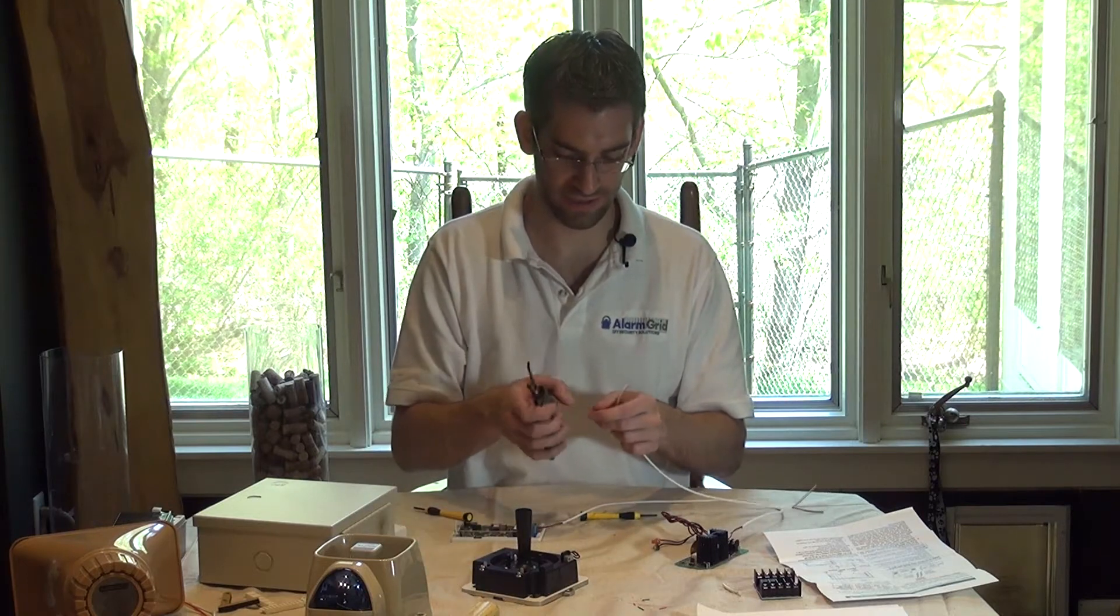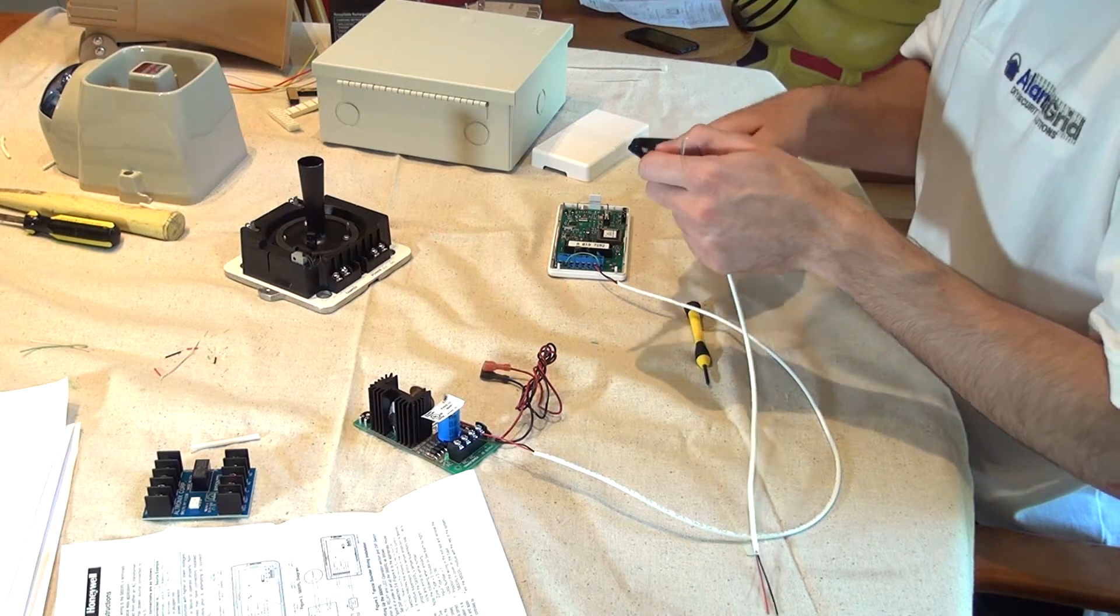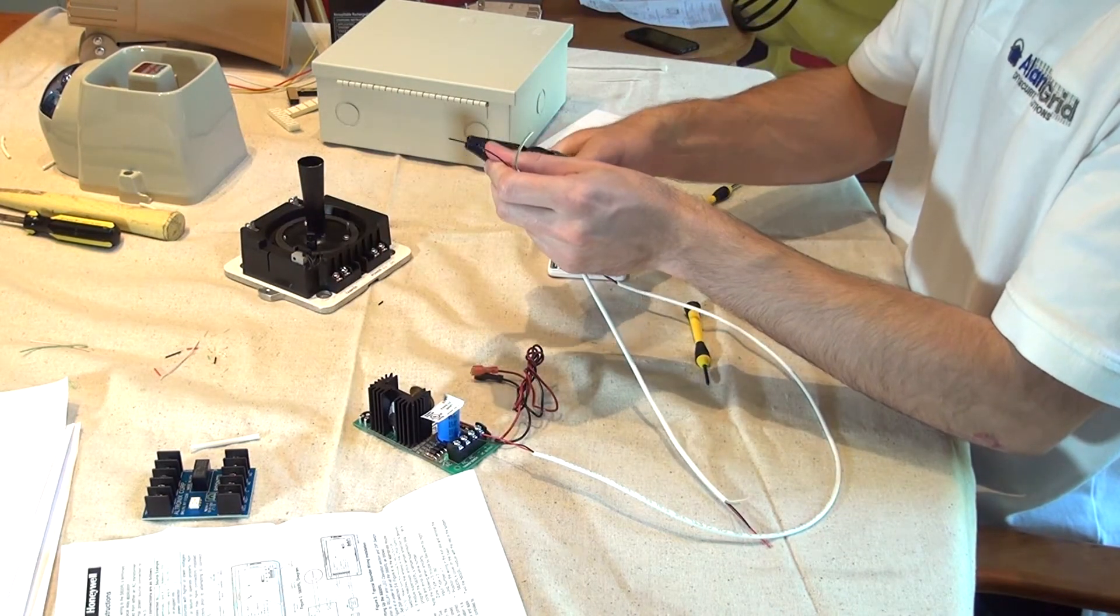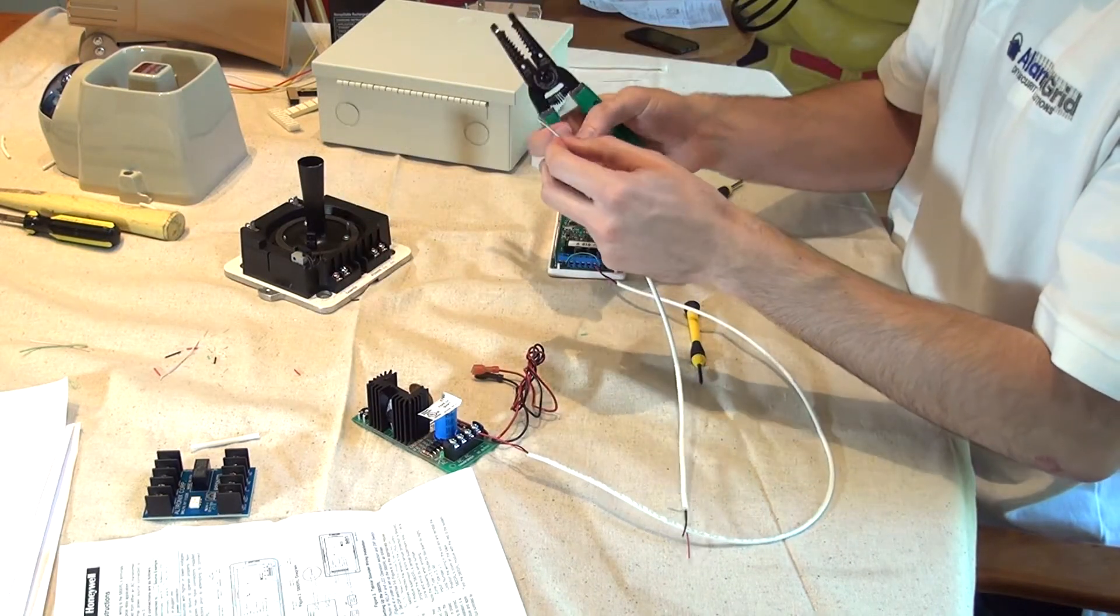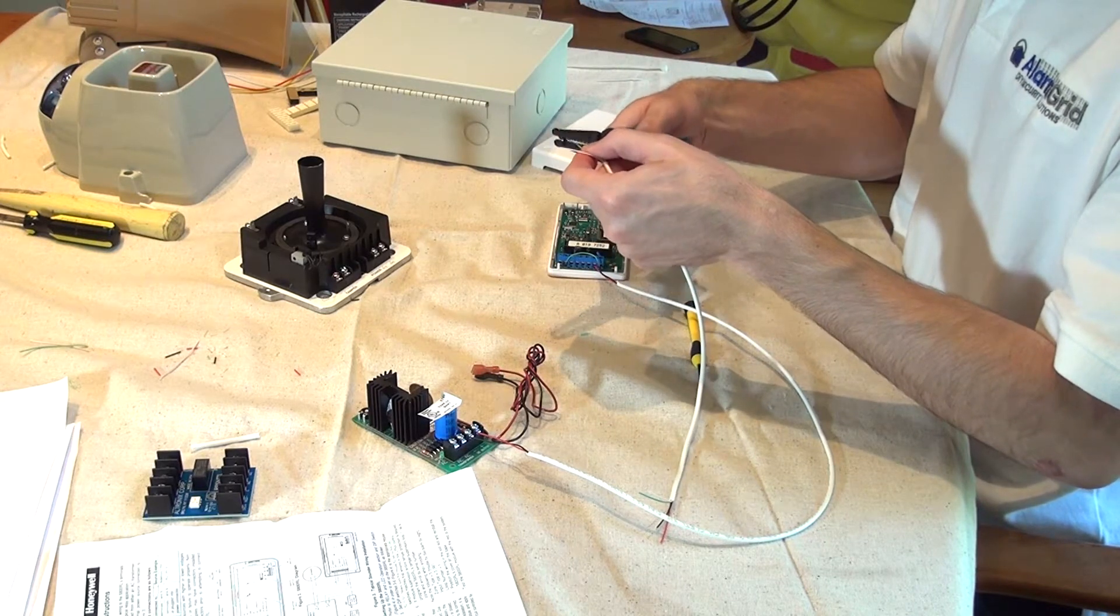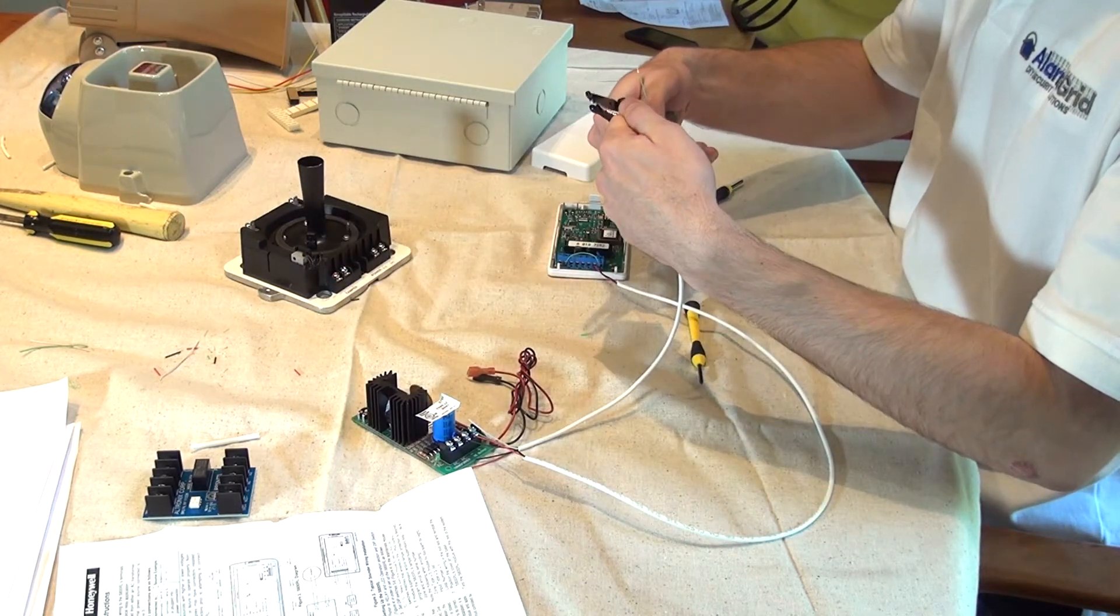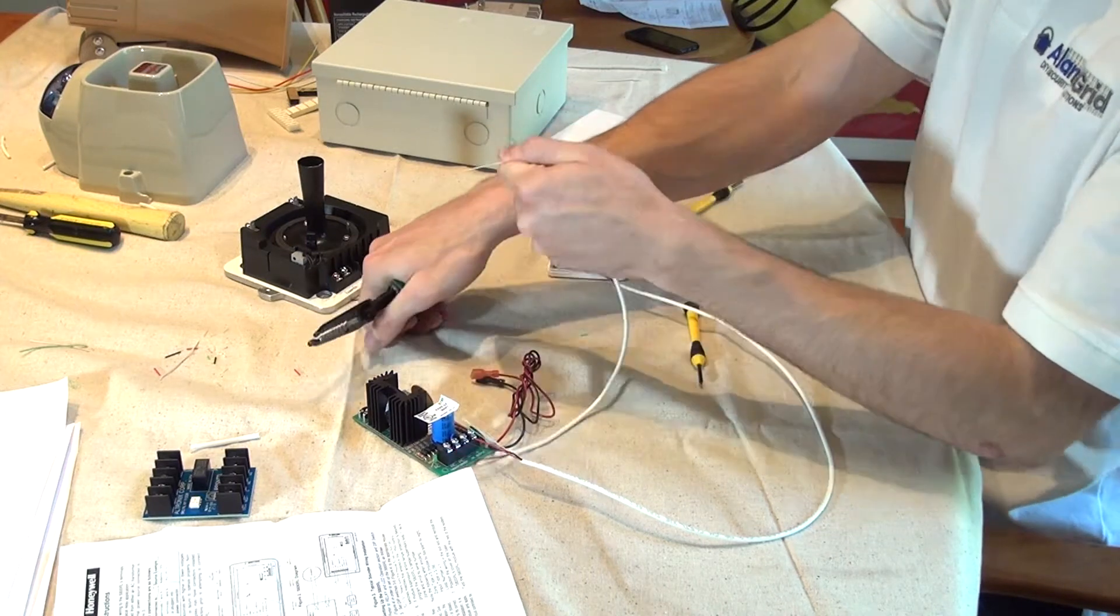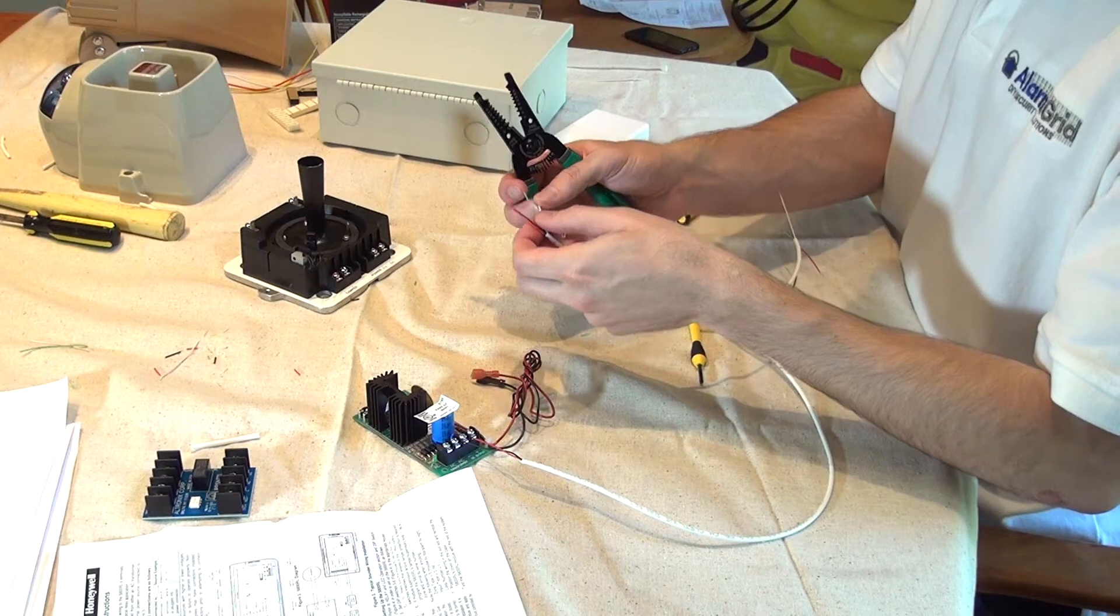We're going to strip back all eight of these to give us a little bit of exposed wire at the end of each. Your wire strippers will give you the notches for the gauge of wire that you're working with. We're using 22 gauge, which is a very typical alarm wire size. 18 gauge works as well.